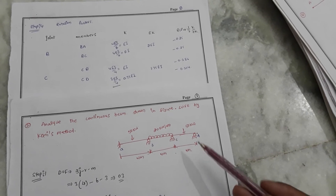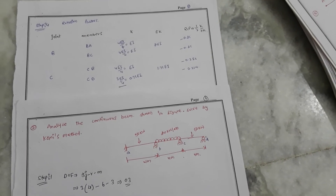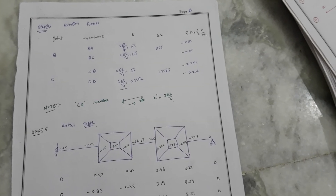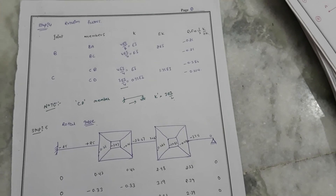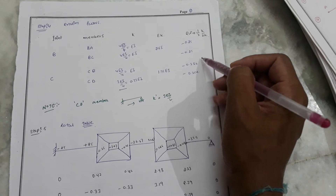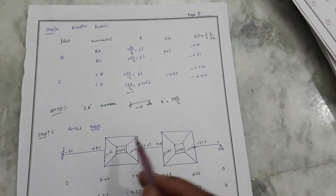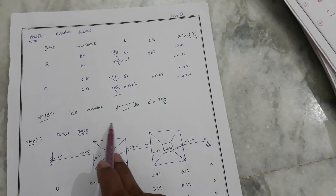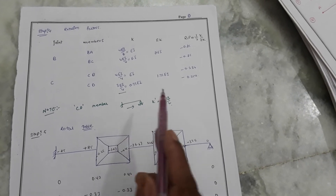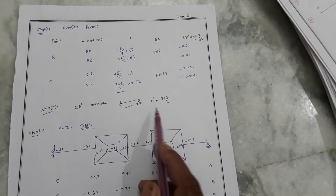Because of the roller support at D, we use modified stiffness 3EI/L for member C-to-D. The rotation factor equals minus K divided by the summation of K. For C-to-D as a roller support, we take 3EI/L — this is important to remember.